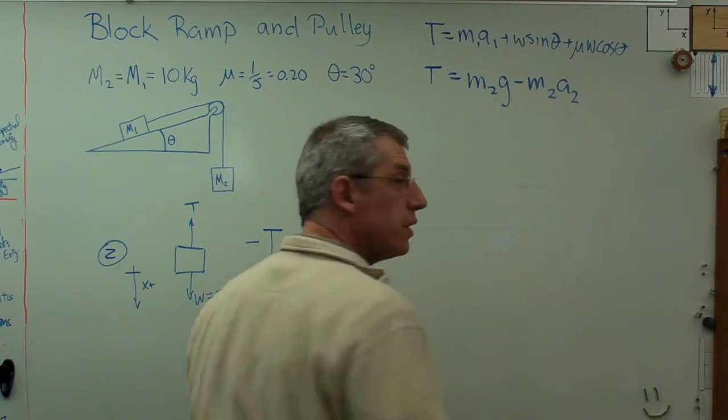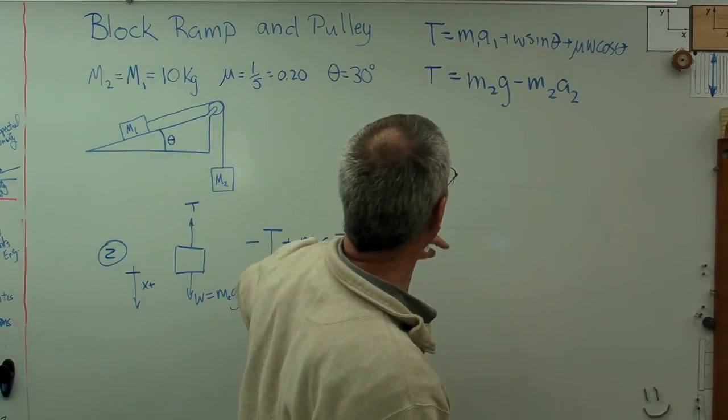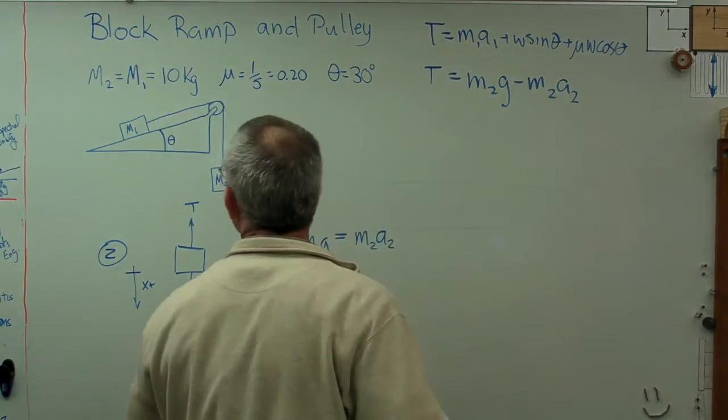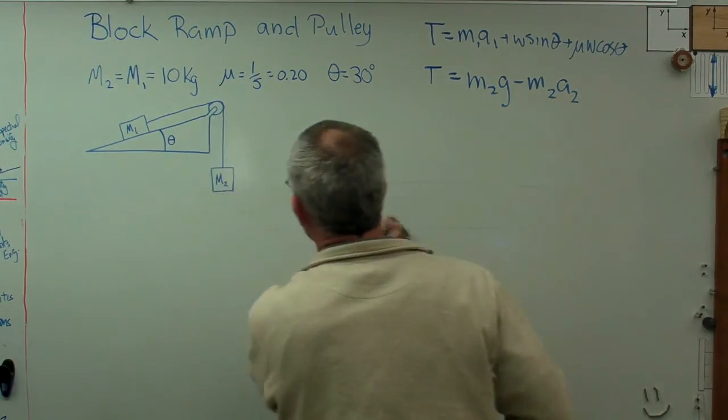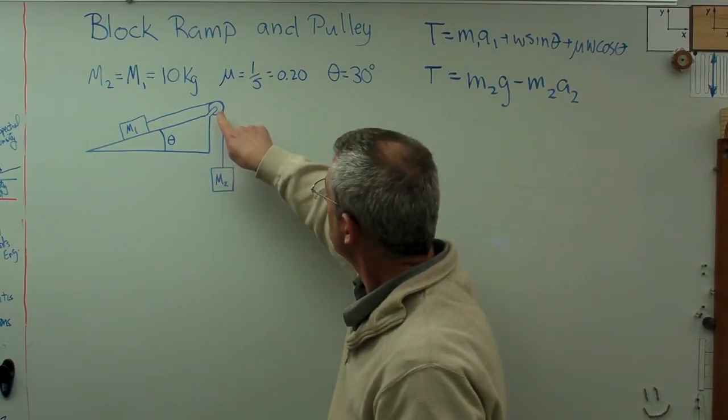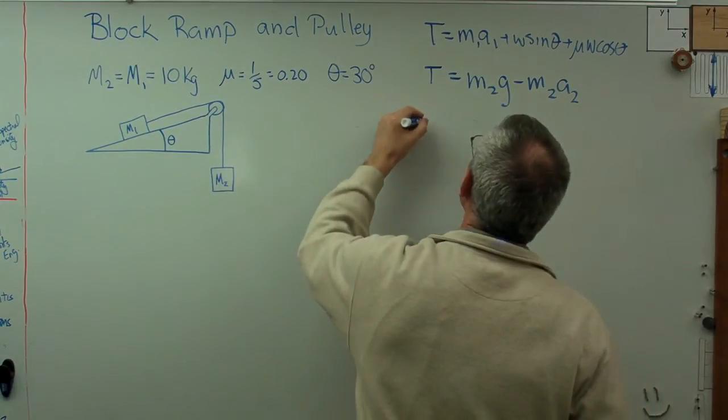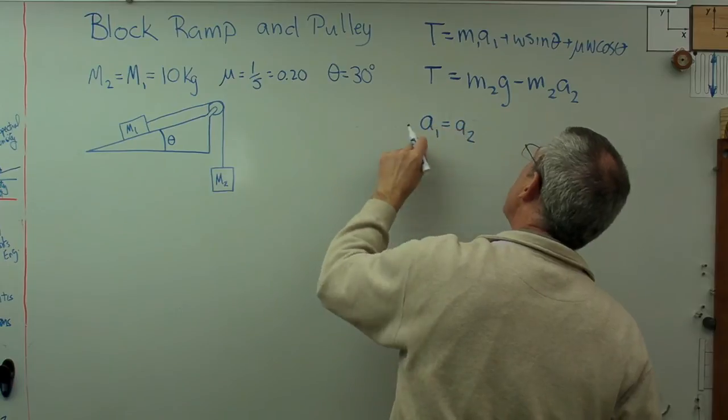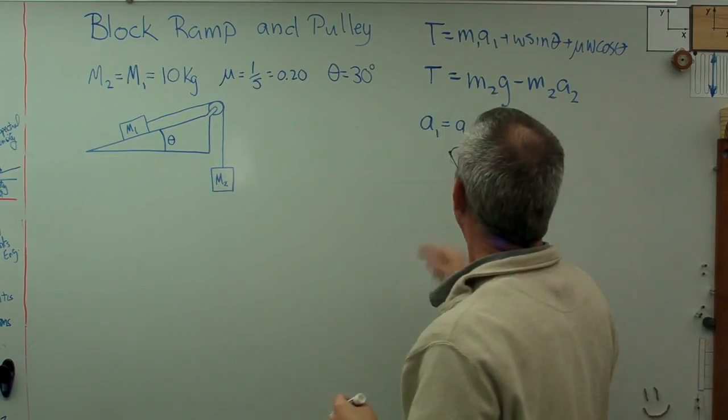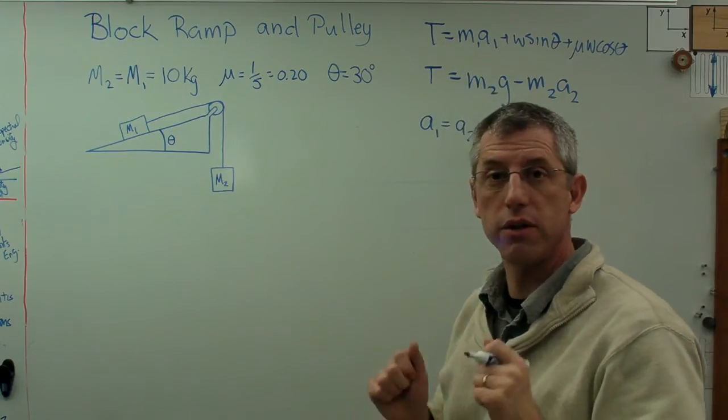I've got two equations. What don't I know here? I don't know T but I don't care what T is, it's going to go away here in a second. a1 and a2 - I've got too many unknowns for the number of equations I've got. How am I going to deal with this? There's one other equation I'm going to get here. Since there's only one pulley here, there's no mechanical advantage, so I know that a1 equals a2. They're both positive because of the way I defined the coordinate system. Now I've got three things I don't know and I've got three equations, so I'm in business.